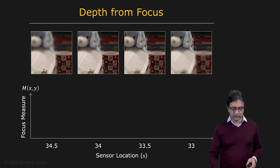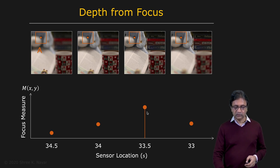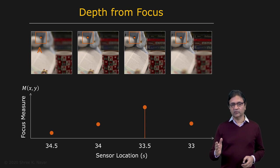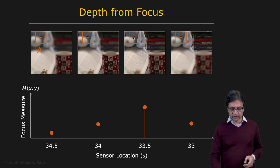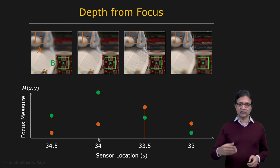Consider a stack of images. For one point, plotting sensor location on the horizontal axis and focus measure on the vertical axis, we see it comes into focus around a particular sensor location, producing the highest focus measure value there. We declare that sensor location to be the depth of the point, plug S into the Gaussian lens law, and get the object distance. For a different patch that is much closer, it comes into focus at S equal to 34, and we use that value to compute its depth.